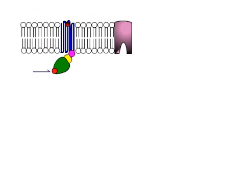Now after the activation of G-protein, the alpha subunit converts its guanine diphosphate into guanine triphosphate. The alpha subunit now gets detached from the G-protein and goes towards the adenylate cyclase to activate it. The adenylate cyclase then starts producing cyclic AMP from ATP.